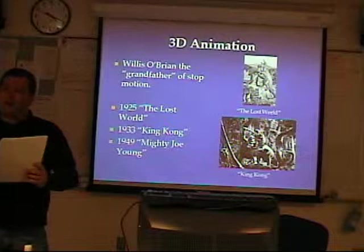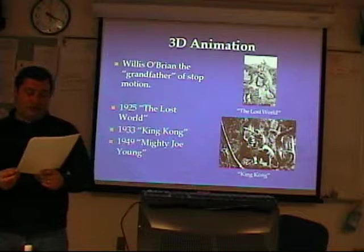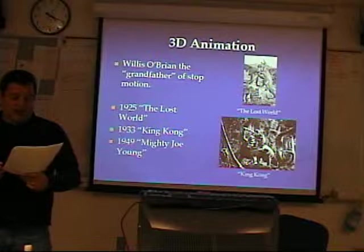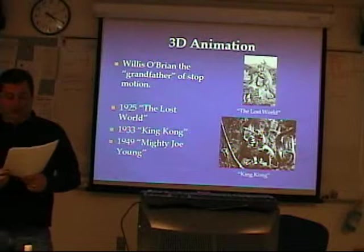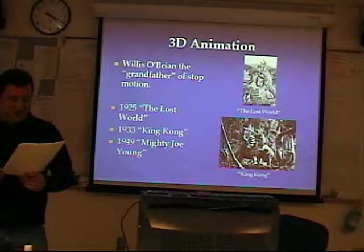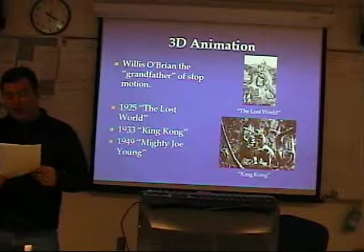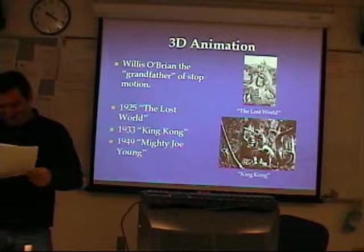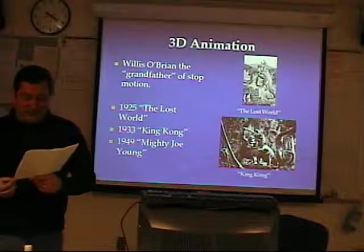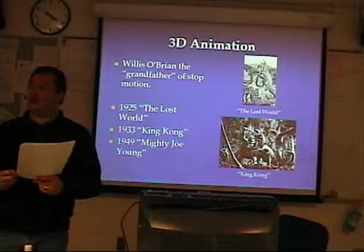Another very important development was stop-motion animation. The man considered the grandfather of stop-motion is Willis O'Brien. He used a combination of soft rubber, clay, and armatures with 3D sets. His first film was in 1917, called 'The Dinosaur and the Missing Link.' 'The Lost World' in 1925 broke new ground, but he is probably best known for 'King Kong' in 1933 — with this film, O'Brien gave Kong a real personality to get audiences to truly feel for him. Many years later, in 1949, O'Brien animated another giant ape in 'Mighty Joe Young.' One of the other animators on that film was a young Ray Harryhausen, who later became legendary for the Sinbad films of the 1960s. 'Mighty Joe Young' won the first Oscar for Special Effects in 1950.